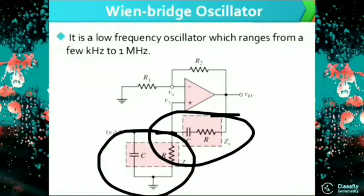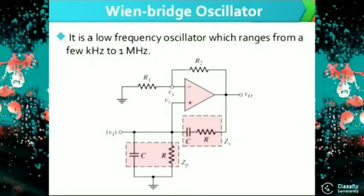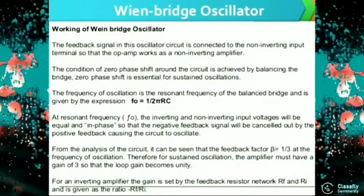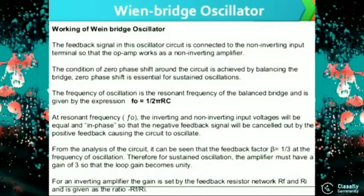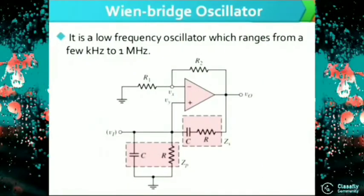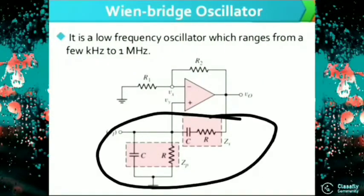By balancing with zero phase shift, we can attain sustained oscillation. The frequency of oscillation is the resonant frequency of the balanced bridge, and is given by the expression f0 = 1 / (2πRC).